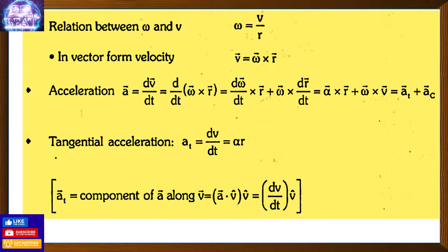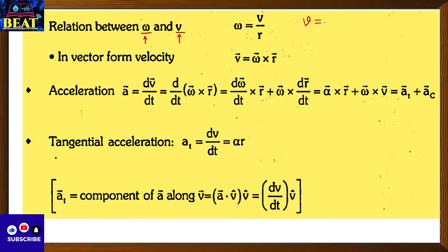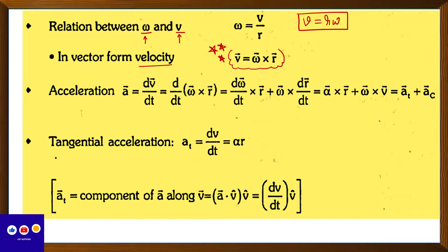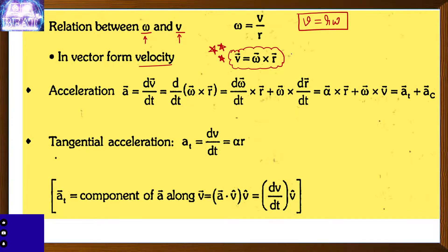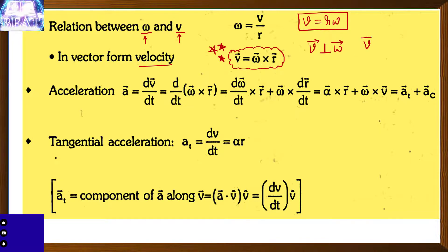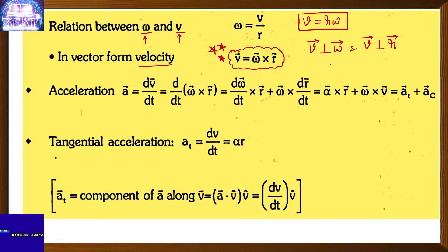Relation between angular velocity (omega) and linear velocity (v): the scalar form is v = rω. But in vector form, the most important formula is: v⃗ = ω⃗ × r⃗. Note carefully — it is omega cross r, NOT r cross omega. This means the velocity vector is perpendicular to the angular velocity omega, and velocity is also perpendicular to the position vector r.